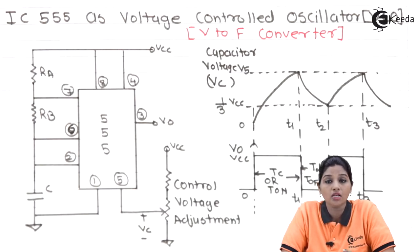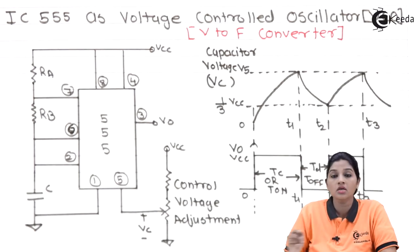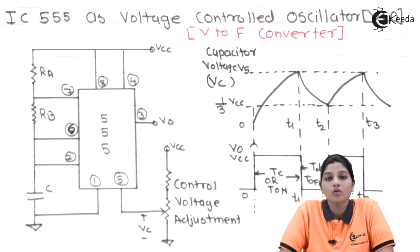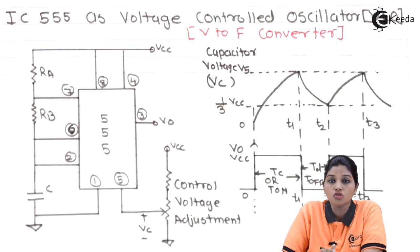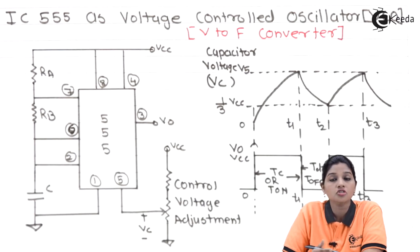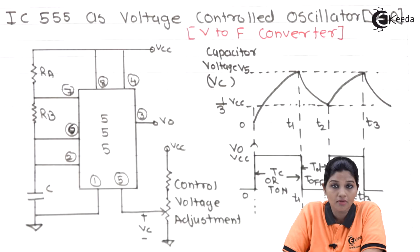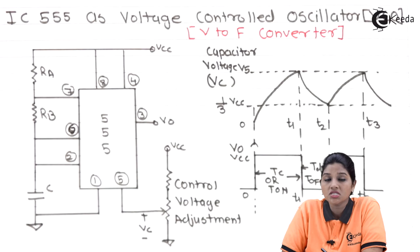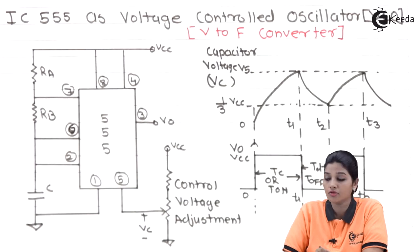So now the voltage at pin number 5 is not equal to two-thirds Vcc — it has a certain variable value. The value of voltage at pin number 5, that is VC, now depends upon the position of the wiper of the potentiometer. As we vary the potentiometer, the voltage at pin number 5 also varies. Now let's look at the waveform of the voltage control oscillator, where VC is no longer equal to two-thirds Vcc.